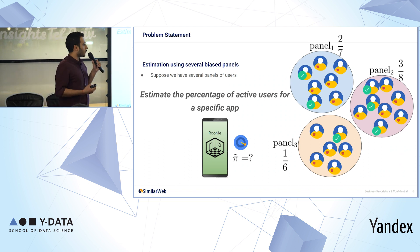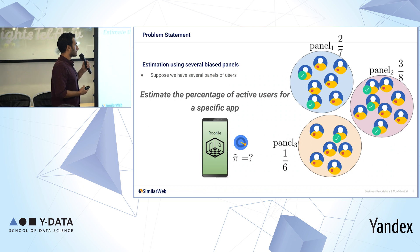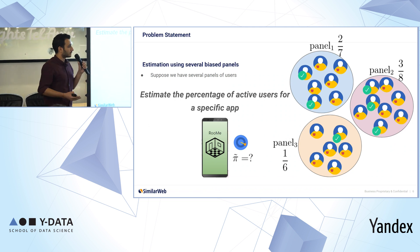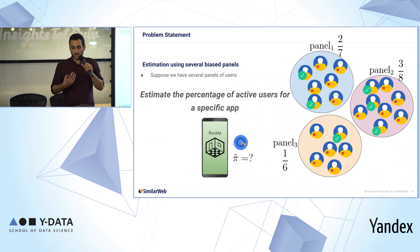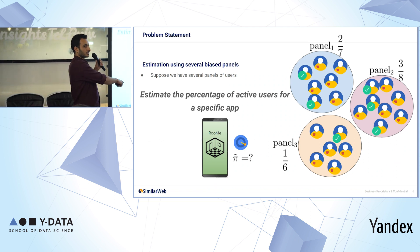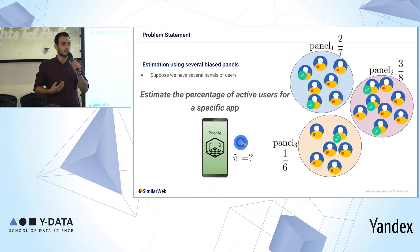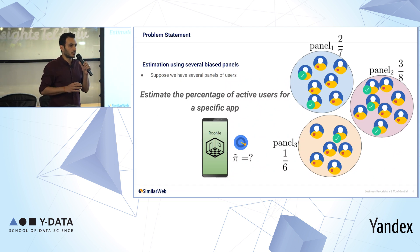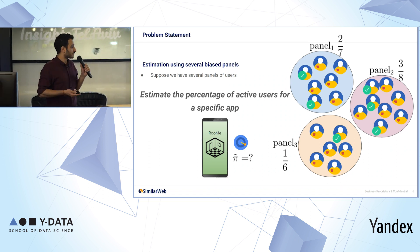For each of these panels we know the amount of users who use this app. In panel one, two out of seven; panel two, three out of eight; and so on. We're looking for pi tilde, which is the actual percentage of active users throughout the total population and not only in the panels — it might be something like one out of six.